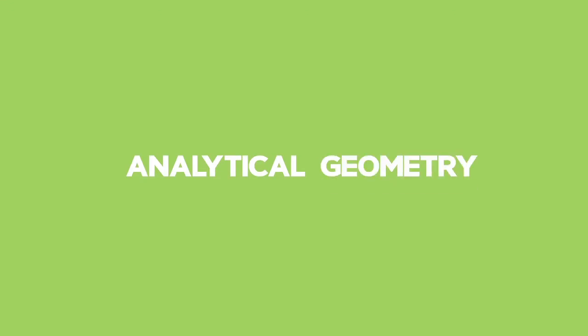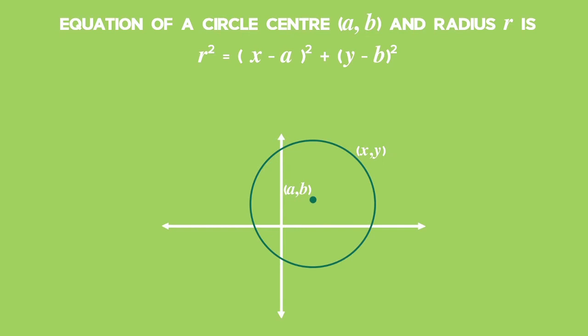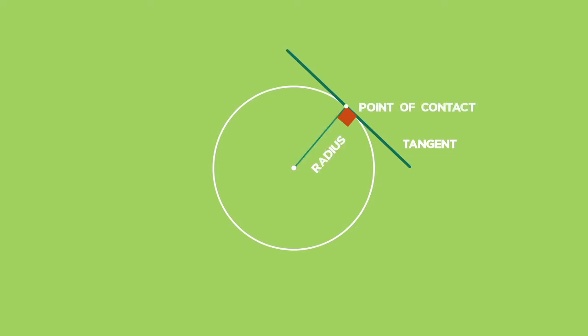In Grade 12 Analytical Geometry, we have established that the equation of a circle's centre (a,b) and radius r is r² = (x - a)² + (y - b)². We also know that a tangent to a circle is perpendicular to the radius of the circle at the point of contact.